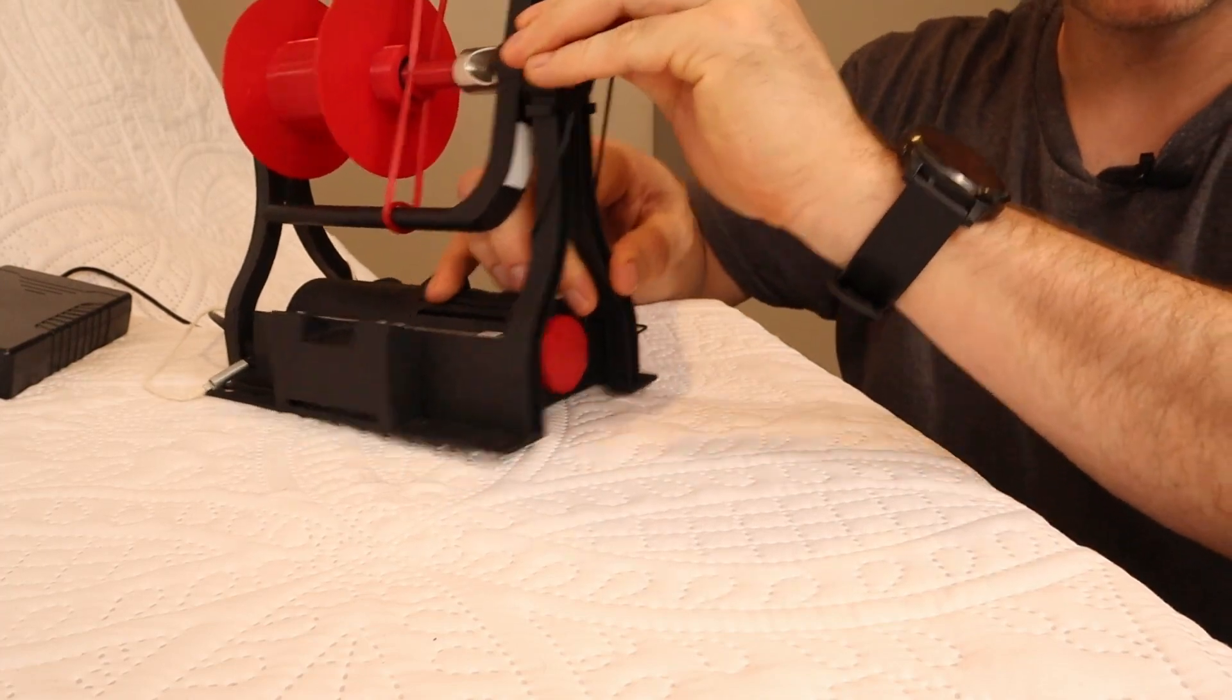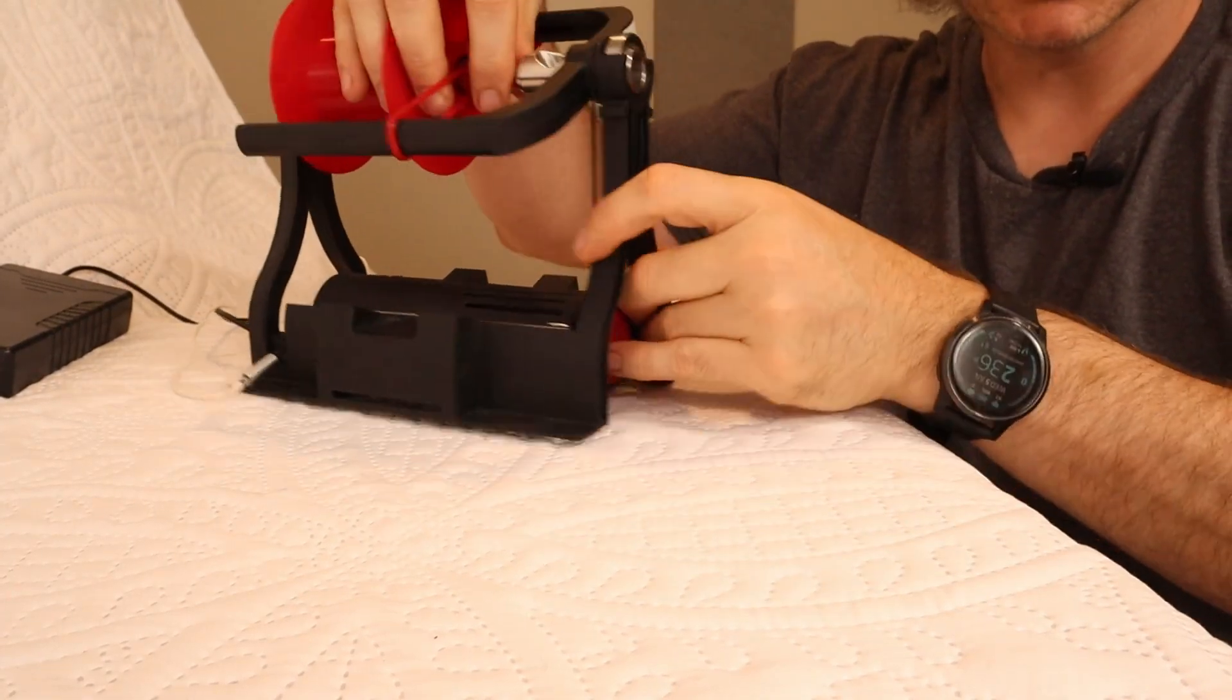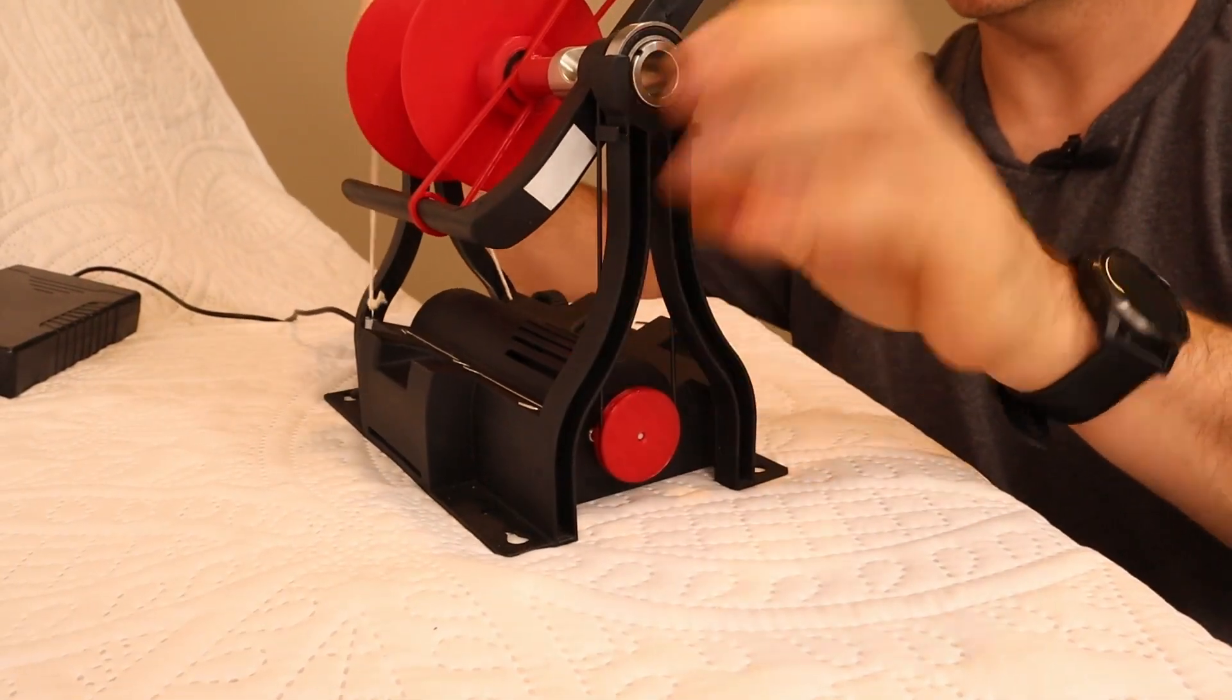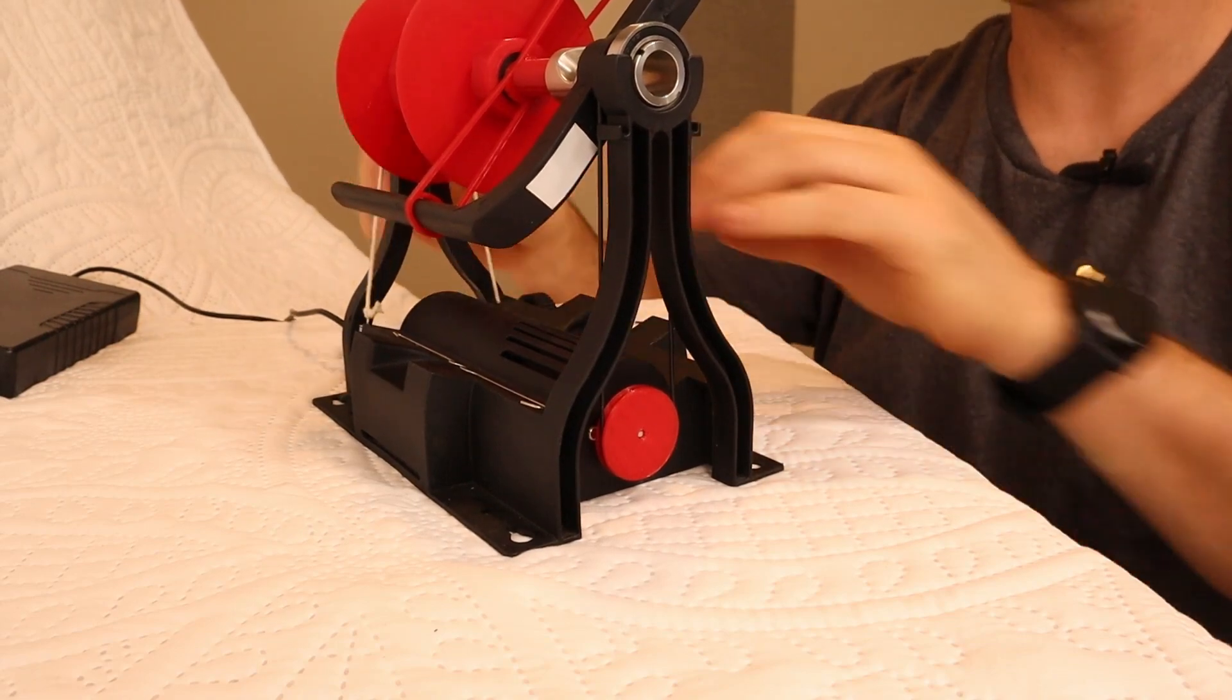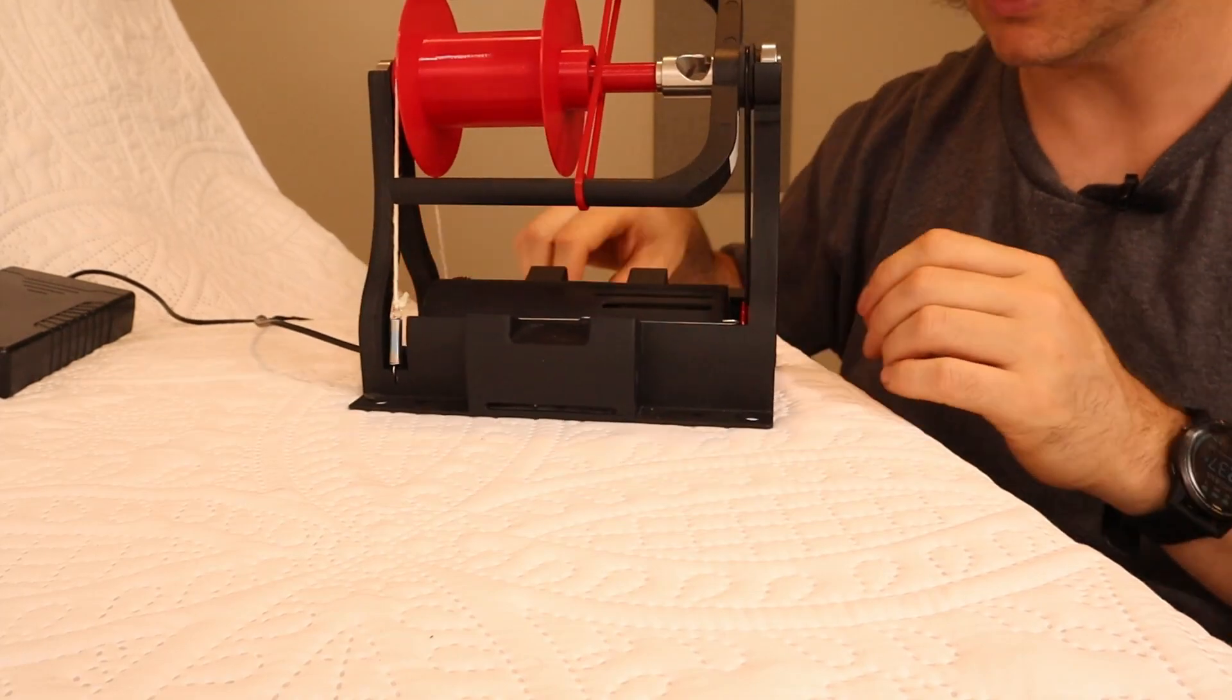Then you take the drive belt and put it into the correct pulley and groove on the flyer. You install the tension string. You might want to go with a finer tension string if you're really trying to do lace weight yarn to get a little bit lighter tensions.